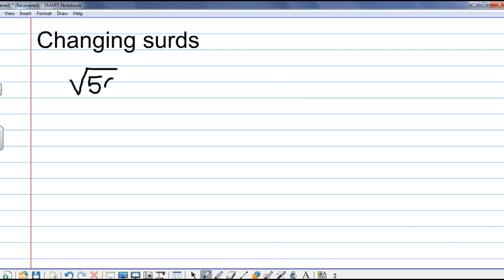For instance, write the surd root 50 in the form of a root 2. Now, what that means is we've got to write 50 as some product of 2. Now, 50 is the same as 25 times 2.